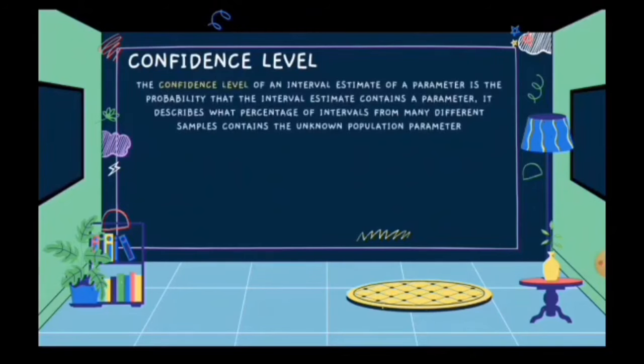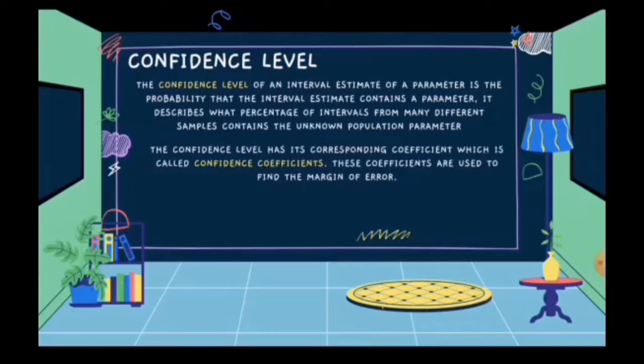First, let's define what a confidence level is. A confidence level refers to the percentage of all possible samples that can be expected to include that population parameter. The confidence level of an interval estimate is the probability that the interval estimate contains a parameter — it describes what percentage of intervals from many different samples contains the unknown population parameter. The confidence level has a corresponding coefficient called the confidence coefficient, which is used to find the margin of error.